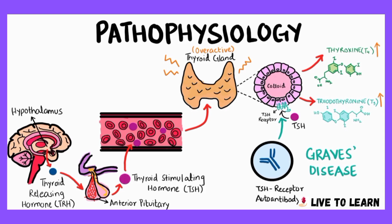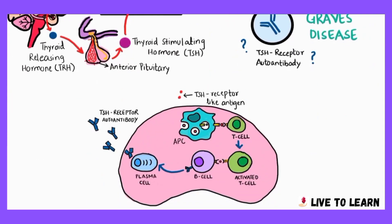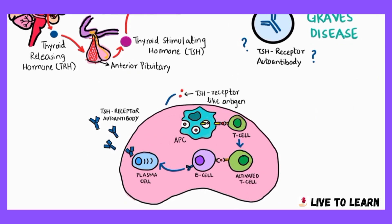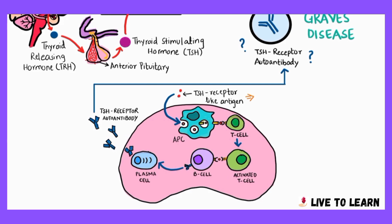The question is, where do these autoantibodies come from? Within the lymph node, the TSH receptor-like antigen is picked up by the antigen presenting cells and is presented to the naive T cells. The T cells become activated and in turn cause the B cells to produce plasma cells that give rise to autoantibodies against the TSH receptor.